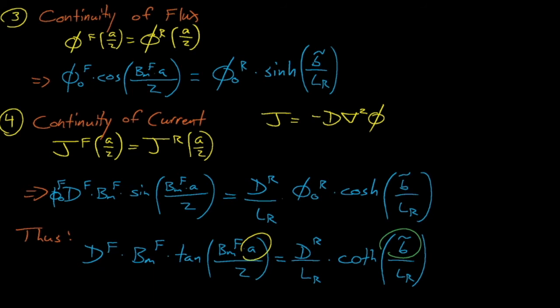If we want to finish off solving for these flux expressions, we can determine the phi naught terms through flux normalization. Once again, this process involves adjusting the phi knots until the flux solutions give us the desired and the known fission rate in the system.